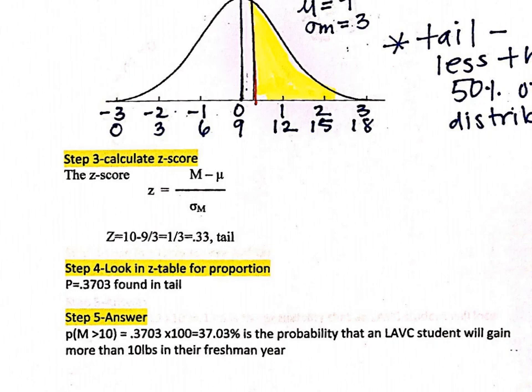So the probability that the sample mean is greater than 10 equals 0.3703 — that's the probability a student will gain more than 10 pounds in their freshman year. That's about a third of freshmen, a little more than a third. Since probability and percentage are equal, we multiply by 100 to get 37.03 percent.